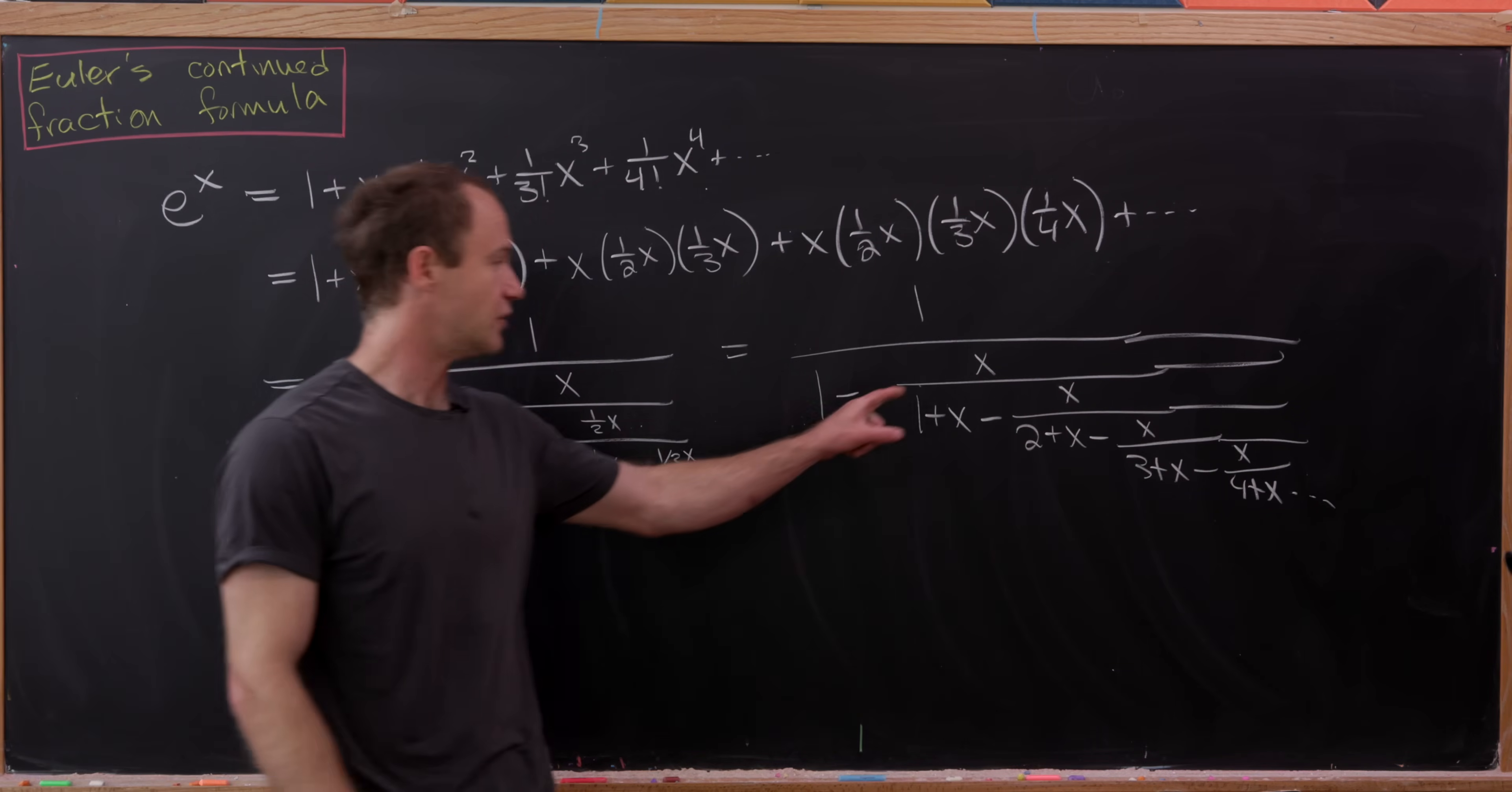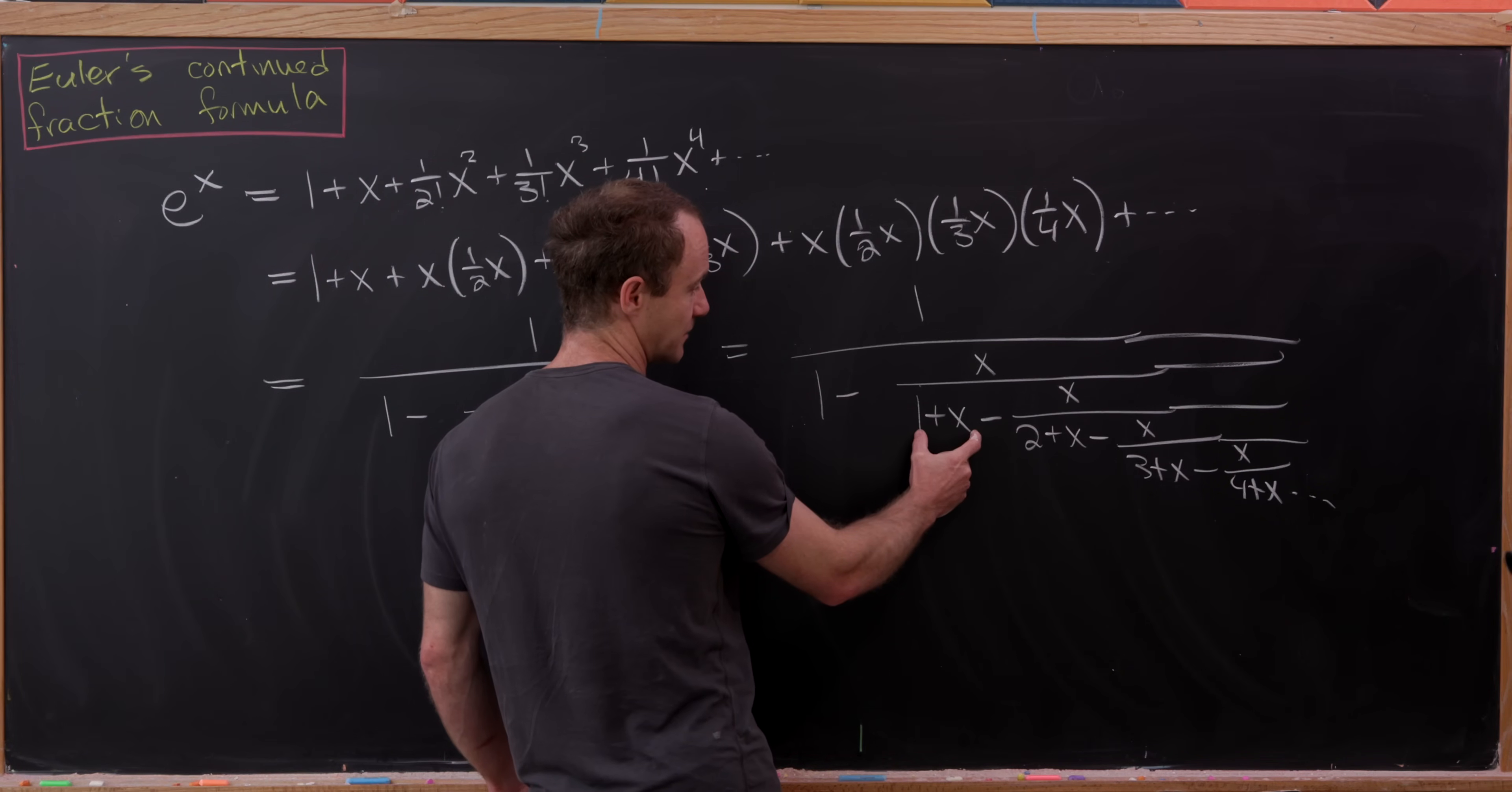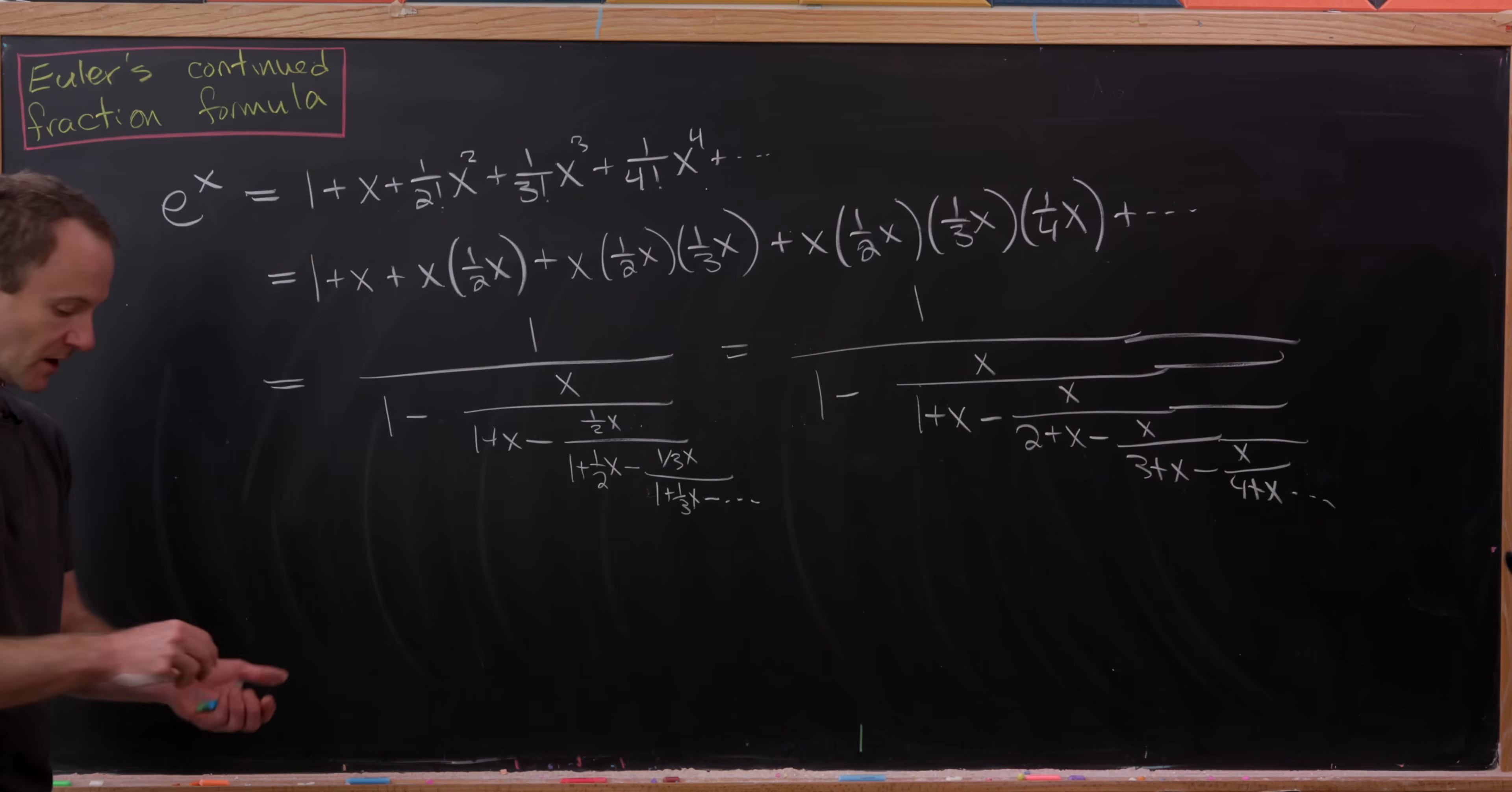Notice that all of the numerators are x, like after that first step. And then the first part of the denominators are being built. 1 plus x, 2 plus x, 3 plus x, 4 plus x, so on and so forth.